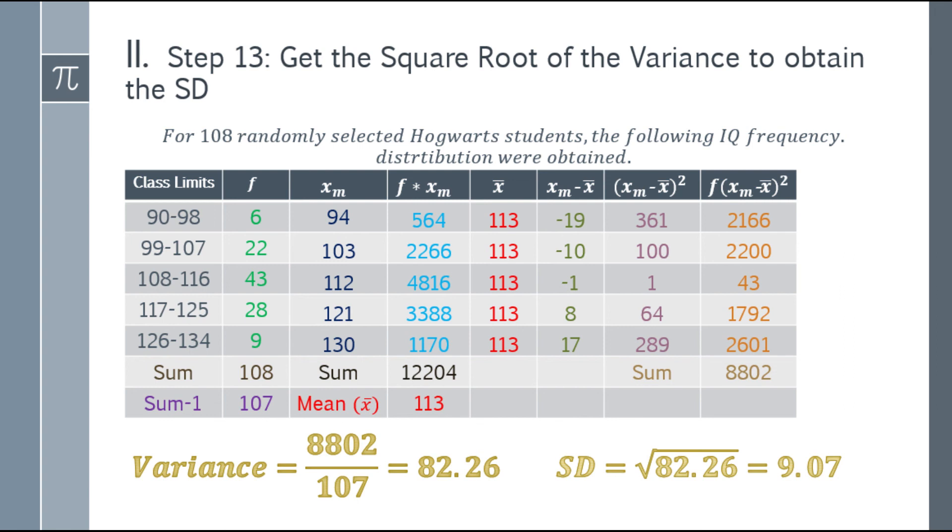Take note, when getting the standard deviation answer, go straight to the calculator. That will be 8,802 divided by 107. Don't estimate or round up or round down that answer. Then take the square root, and you will get an answer of 9.06 something. Round up only at the end: 9.07.